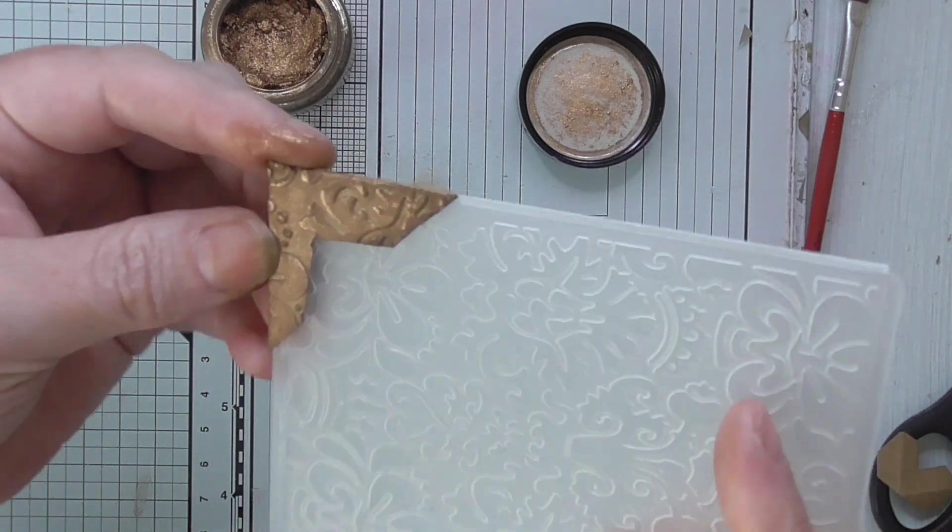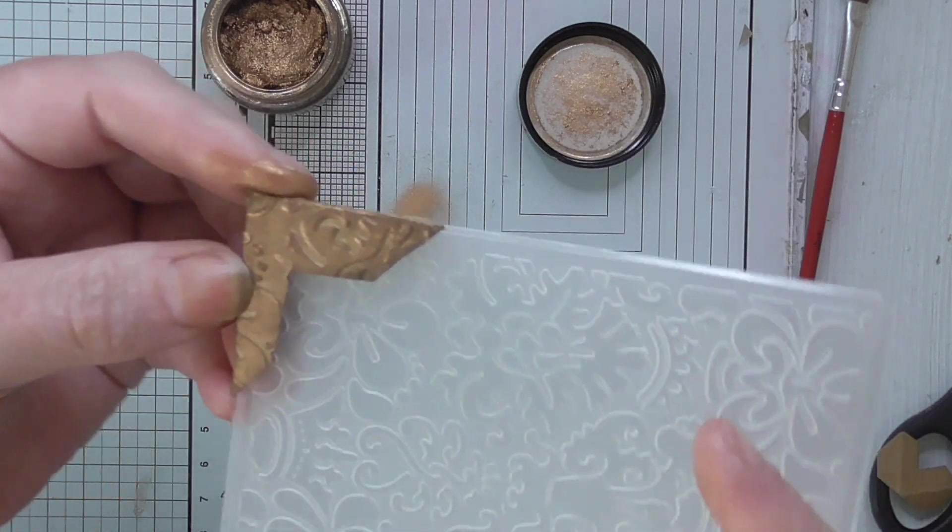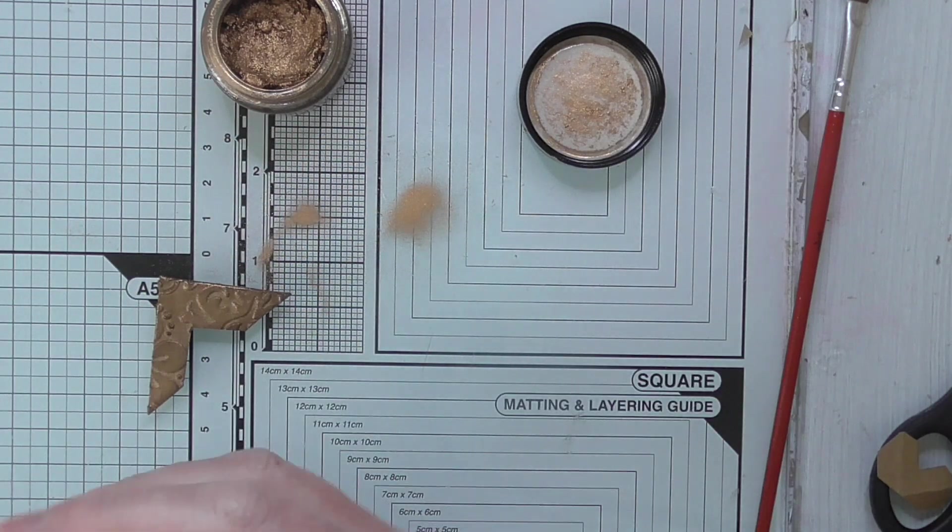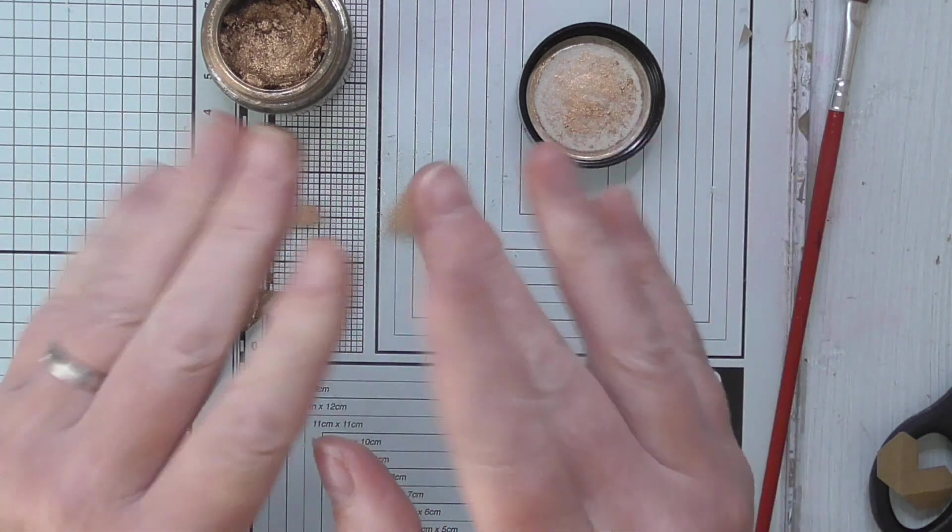So there you go. And that's how you make your faux metal book corners. Hope you'll give that a try. Hope it's useful. Thanks for watching. Take care and I'll see you soon. Bye bye for now.